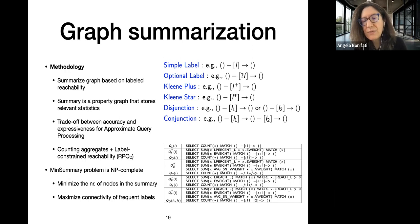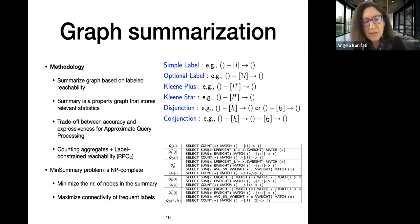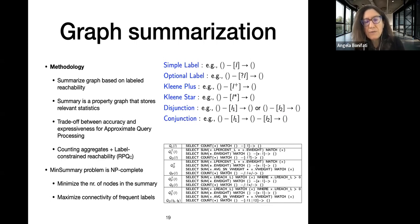We focused on labeled reachability queries including simple labels, kleene-plus, kleene-star, disjunction, and conjunction between labels. In general, the problem of finding the minimal summary — minimizing the number of nodes while maximizing connectivity of frequent labels — is NP-complete. We came up with heuristics to compute this summary and then evaluate approximate query results.